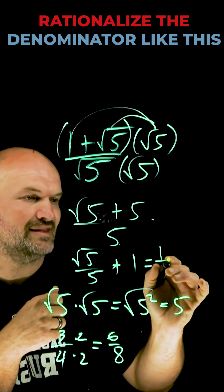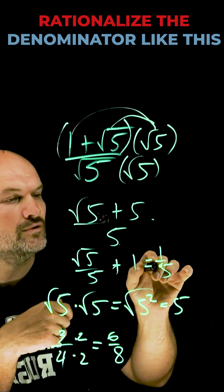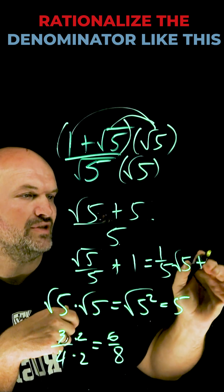Or you could also rewrite this. Instead of dividing by five, multiply by one-fifth times the square root of five plus one.